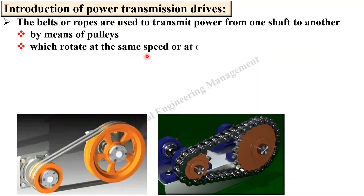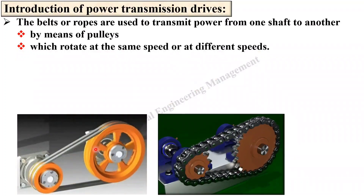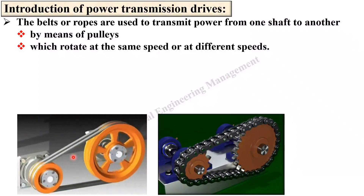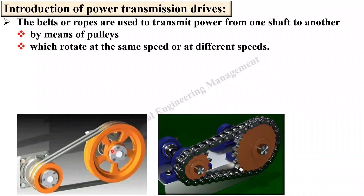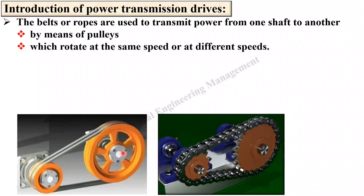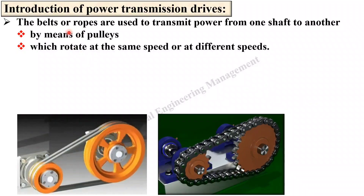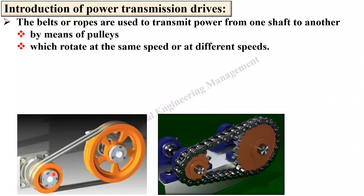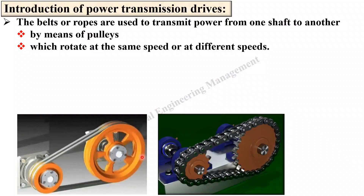The pulleys can rotate at the same speed or at different speeds. Here you can see the speed of both pulleys is different because the diameter is different. If you take the same diameter then you can rotate at the same speed; if you change the diameter then you can rotate at a different speed. Simply, by means of a belt you can transmit power from one shaft to another shaft at same or different speeds.